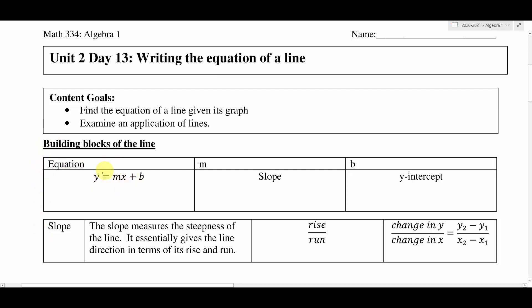Just some quick review here. We've talked about the building blocks of lines before, just to remind you that the equation of a line looks like this, where we have y equals mx plus b, where m represents the slope of the line, and b represents the y-intercept of the line. Slope measures the steepness of the line, so it essentially gives the line direction in terms of its rise and run. You should be pretty good at finding the slope of the line.